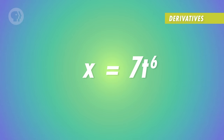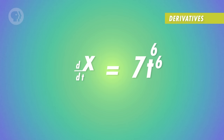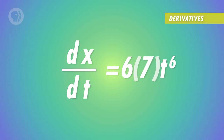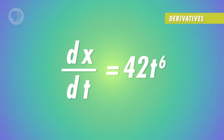Now let's try to find a couple more derivatives using the power rule. x equals 7t to the power 6 is another power-style equation. It has a variable t raised to the power 6, with a number in front of it – 7. The first thing we do is take the exponent and stick it in front of the variable, but there's already a number in front of t: 7. So we end up multiplying them. 7 times 6 is 42. Then we subtract 1 from the power that t is raised to, so we end up with 42t to the power 5.